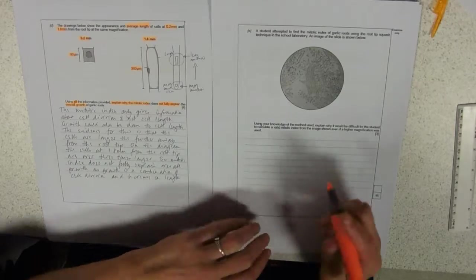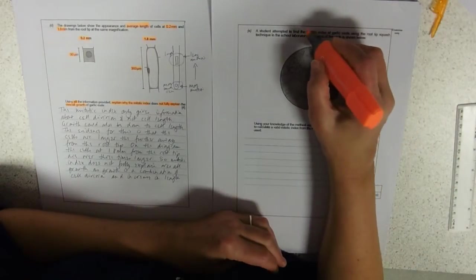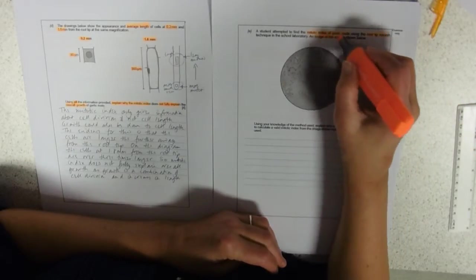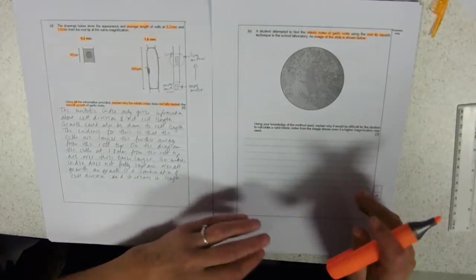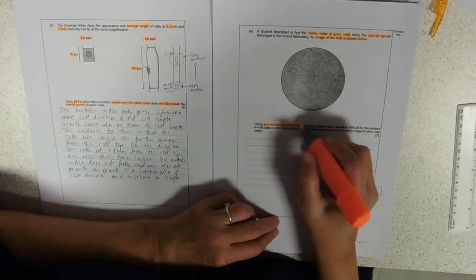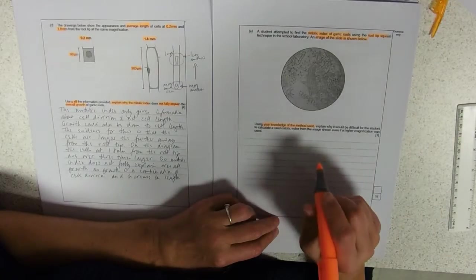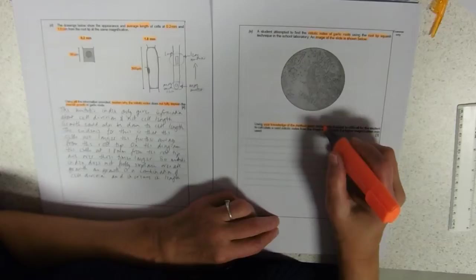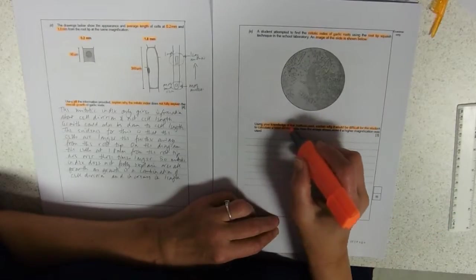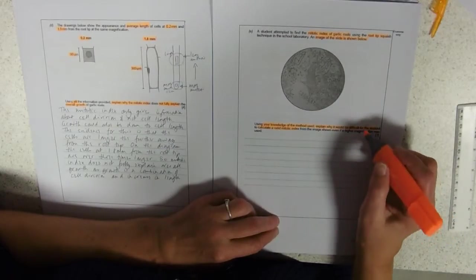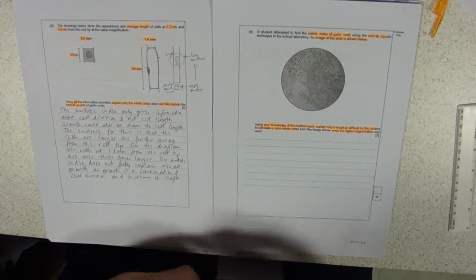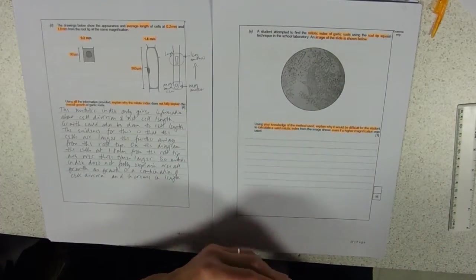The student attempted to find the mitotic index of garlic roots using the root tip squash technique. And an image of the slide is shown below. Obviously in the exam, this is in beautiful full-coloured pink. Using your knowledge of the method used, this is an experiment we did, explain why it would be difficult for the student to calculate a valid mitotic index, even if we used a higher magnification. So, even if we could see those cells bigger, why would it be difficult?